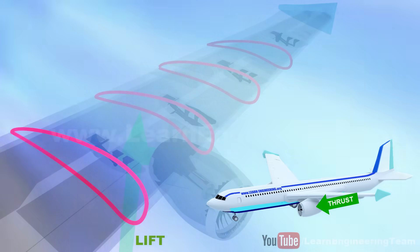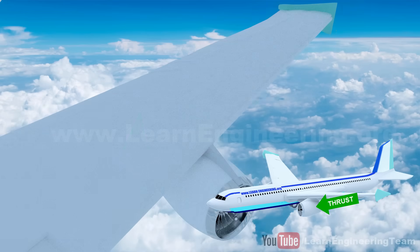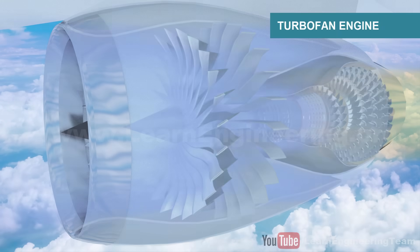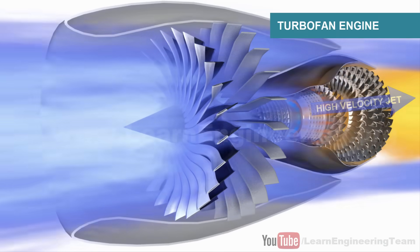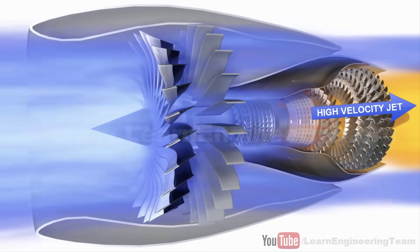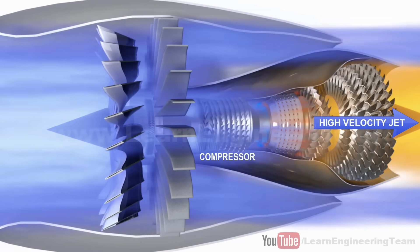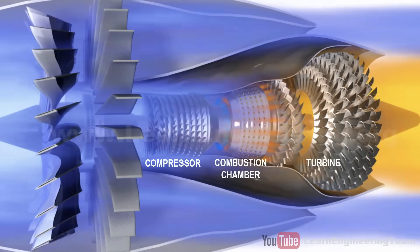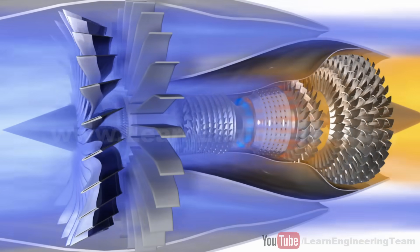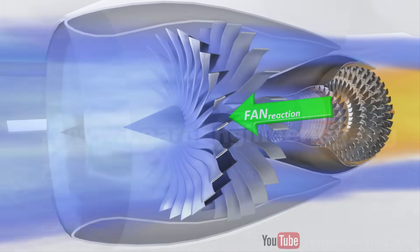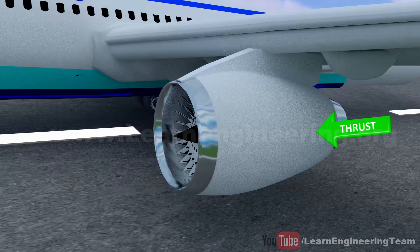Thrust force makes an airplane move forward. To produce this thrust, a turbofan engine is used in modern civil aviation aircraft. The reaction force of a high-velocity exit jet gives the turbofan engine its thrust force. To produce this high-velocity jet, the incoming air is passed through a compressor, combustion chamber, and turbine stages. The engine also derives thrust from the fan's reaction. Thus, turbofan engines produce a great amount of thrust and make the airplane move forward.